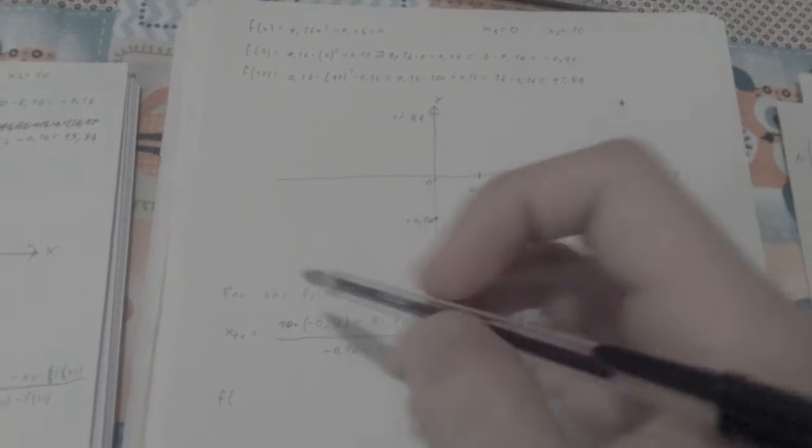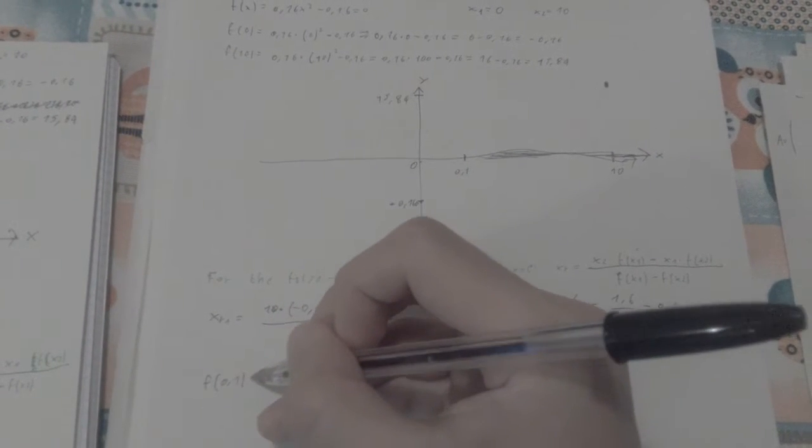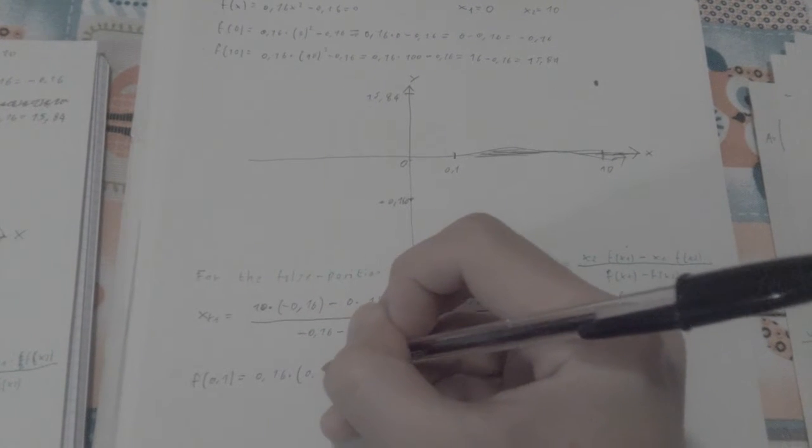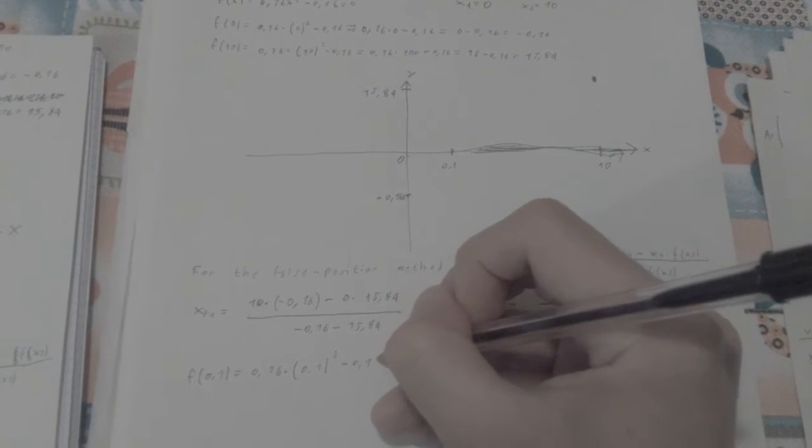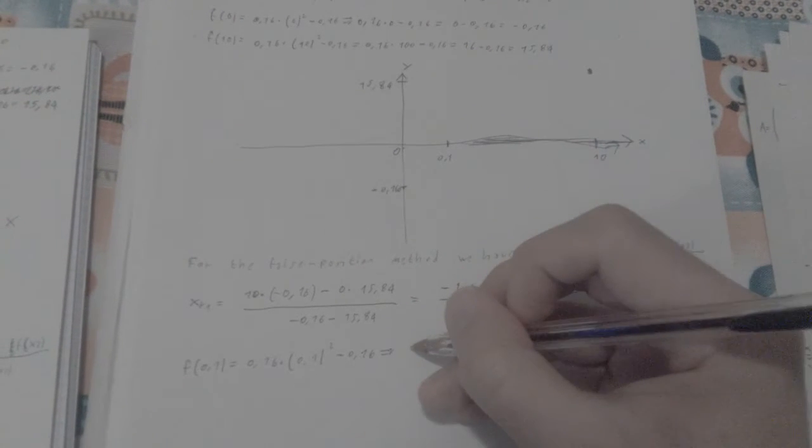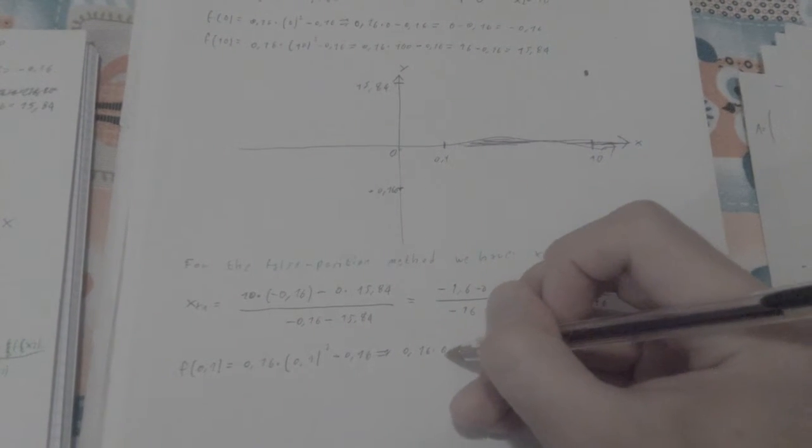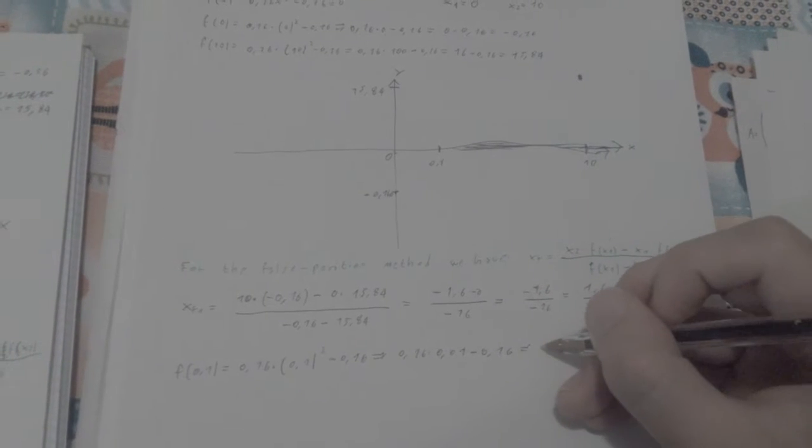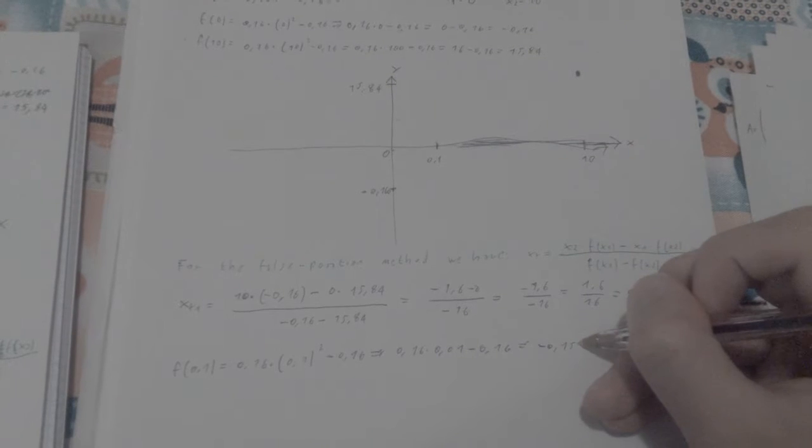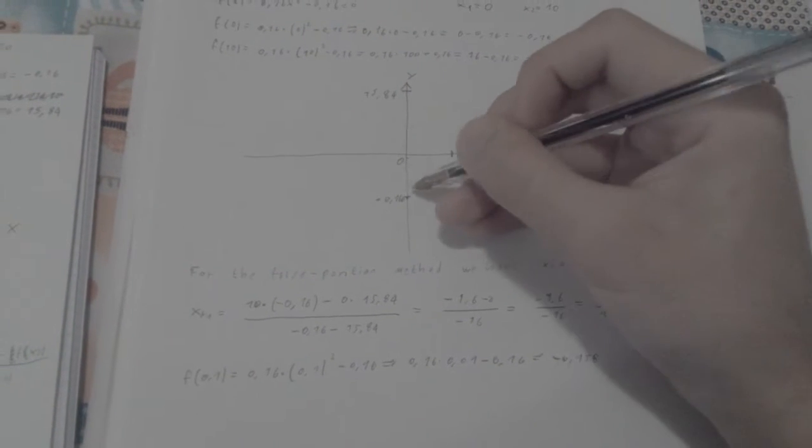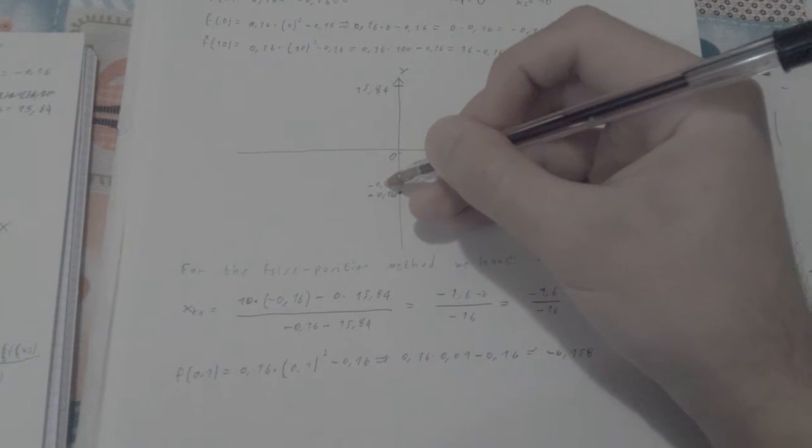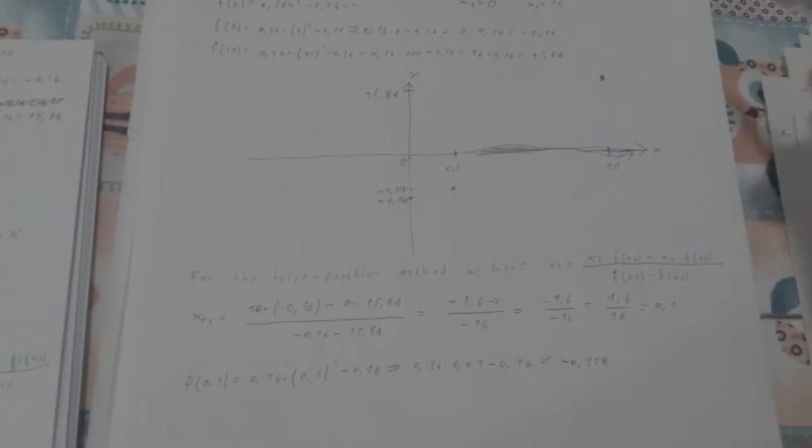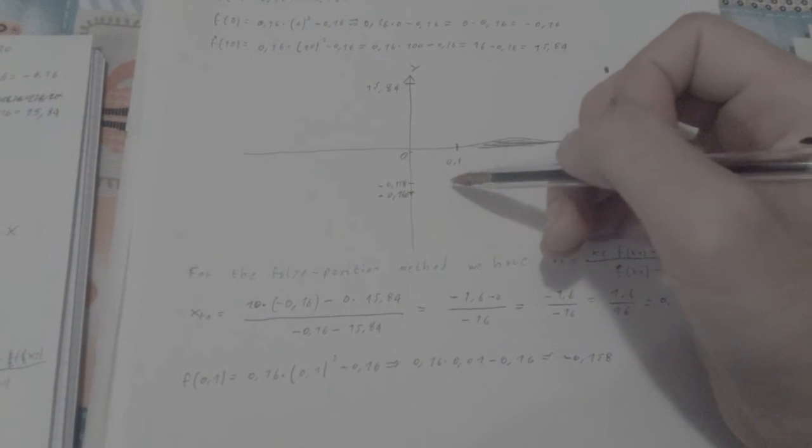So let's see if we plug 0.1 back into our function, let's see what we're going to get. We're going to get 0.16 times 0.1 squared minus 0.16, which is 0.16 times 0.01 minus 0.16, which gives me negative 0.158. So my value is going to be negative 0.158 here, so the function is still negative but we're getting closer to zero.